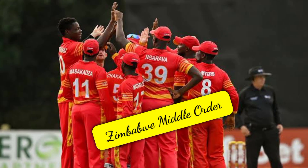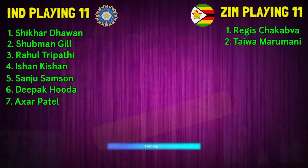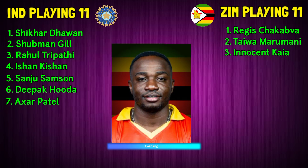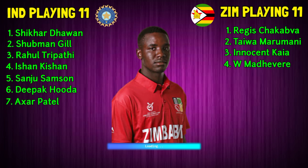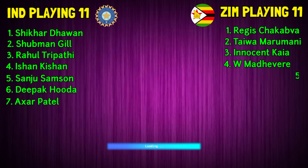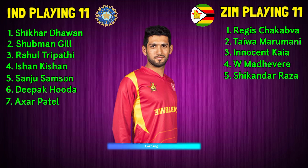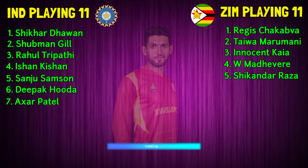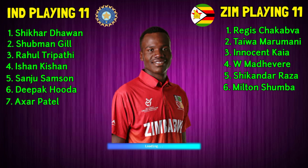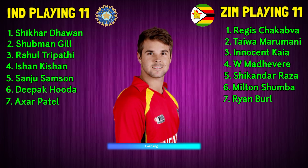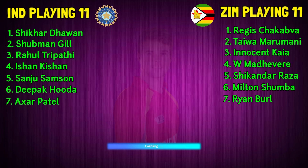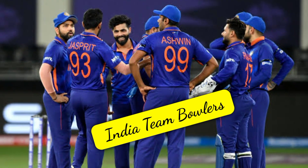Zimbabwe team middle order: No.3 Innocent Kaia, right-handed batsman. No.4 Wesley Madhevere, right-handed batsman. No.5 Sikandar Raza, all-rounder. No.6 Milton Shumba, left-handed batsman. No.7 Ryan Burl, all-rounder.